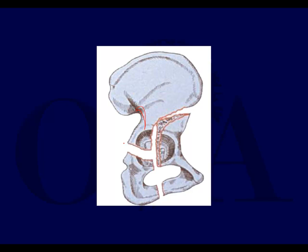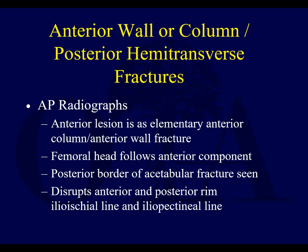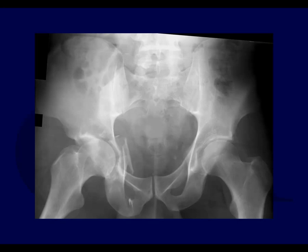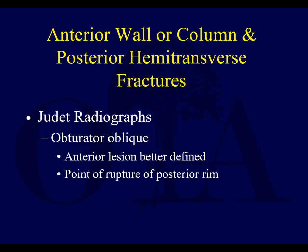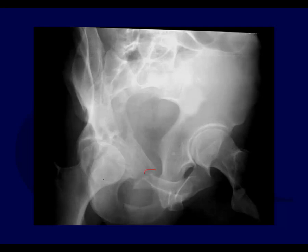Here's your anterior column and posterior hemi-transverse. The posterior column component is just like what you get with a transverse fracture, but the anterior column component comes up like an anterior column fracture — it can exit at varying levels. On AP radiograph, you usually see what looks like an elementary anterior column fracture, with the femoral head following the anterior component, disrupting the anterior and posterior rims, the ilioischial line, and iliopectineal line. You see disruption of both lines and a lot of medial displacement of the femoral head. The Judet view shows the anterior lesion better — seen here with a lot of disruption of the iliopectineal line.